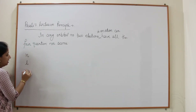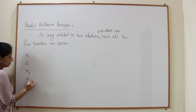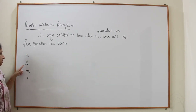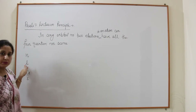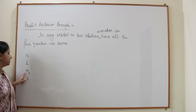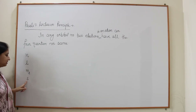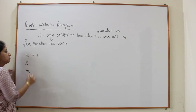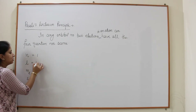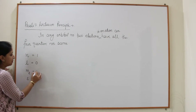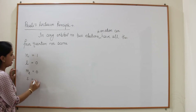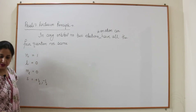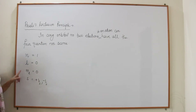The four quantum numbers are N, L, ML, and S (or MS). N is your principal quantum number, L is your azimuthal or subsidiary or angular momentum quantum number, ML is your magnetic quantum number, and S is your spin quantum number.